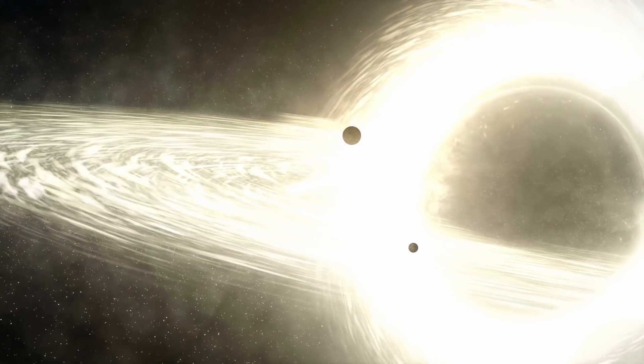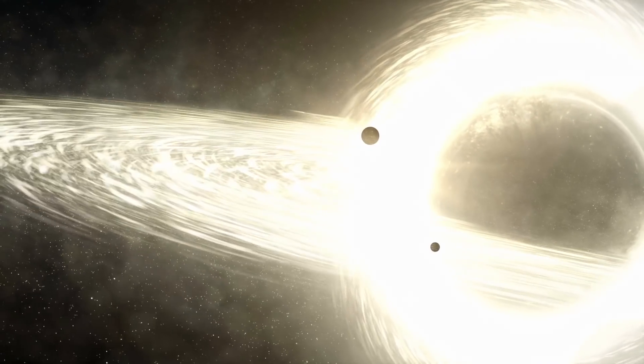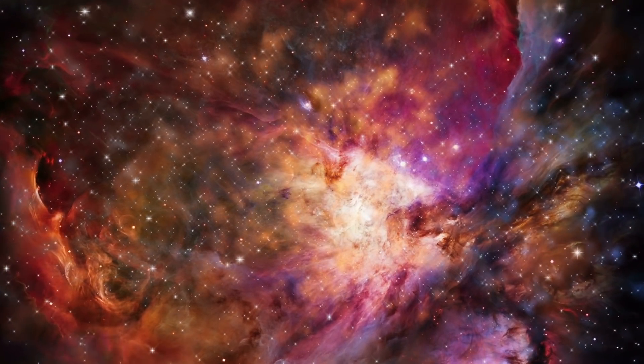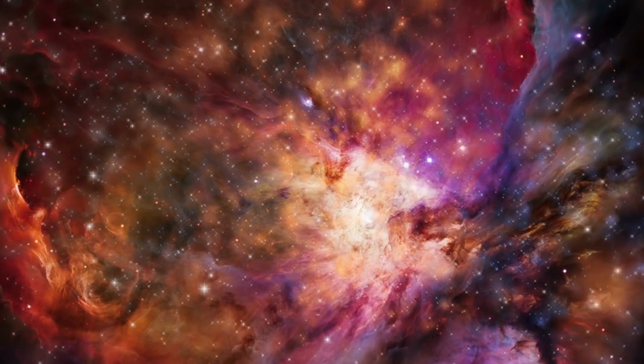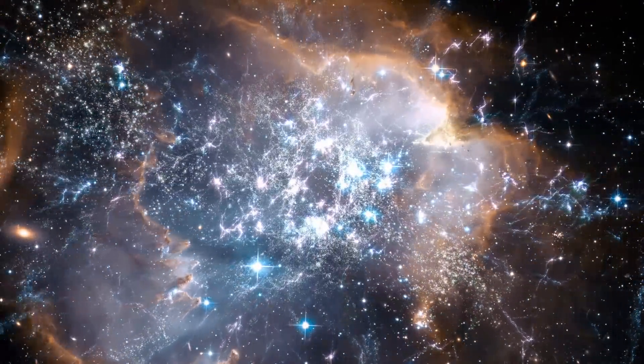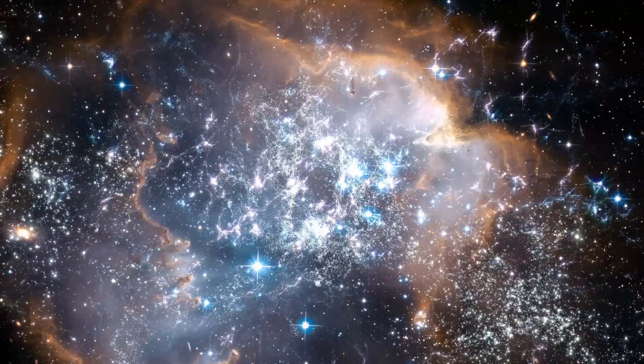However, there are a few things working in the favor of those who are trying to figure this out. In fact, FRB 180916.J0158+65 is one of the handful of FRBs that have been traced back to a galaxy. It's on the outskirts of a spiral galaxy 500 million light-years away, in a star-forming region. This means a supermassive black hole is unlikely, but a stellar mass black hole is possible.